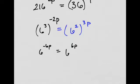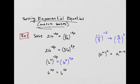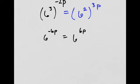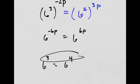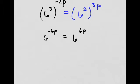So now I've achieved the matching bases. And once you have the bases matched, you can set the exponents equal. If the whole equation is true, then the exponents have to be equal. You can't have like 6 to the 3 equals 6 to the 4 because those are different. Once you get the bases the same, the exponents must be equal. So negative 6p equals 6p.